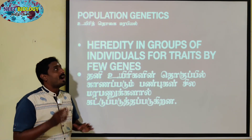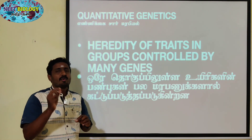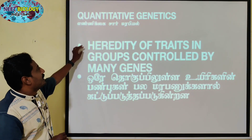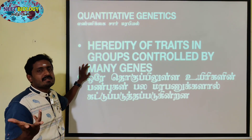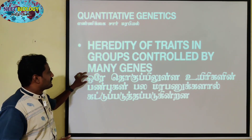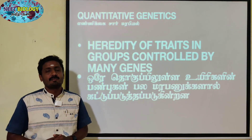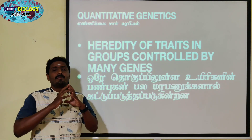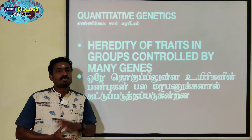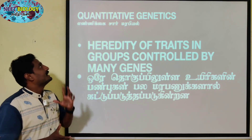This is another important aspect to know. There are a few differences — the heredity of tribes and groups controlled by many genes. How many genes are involved is the subject of quantitative genetics. That is the position of loci. That is quantitative genetics.